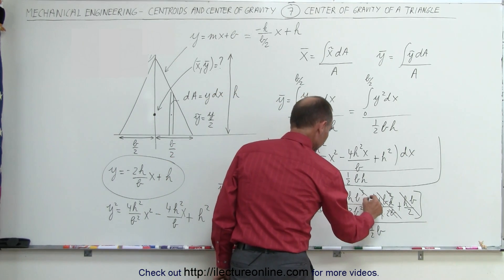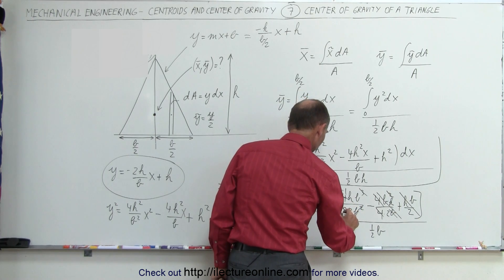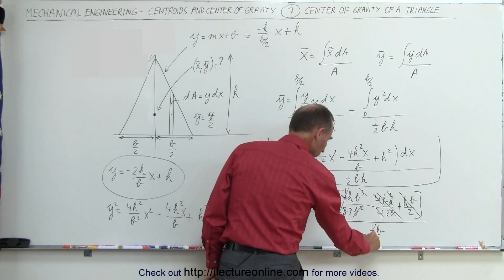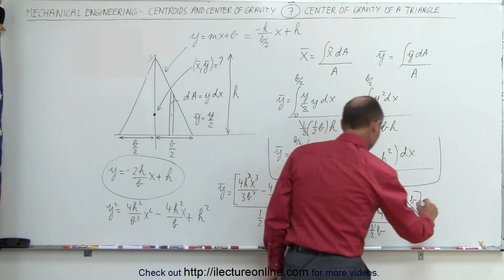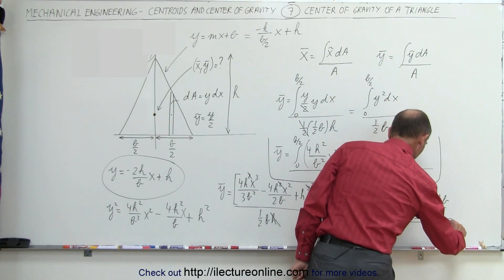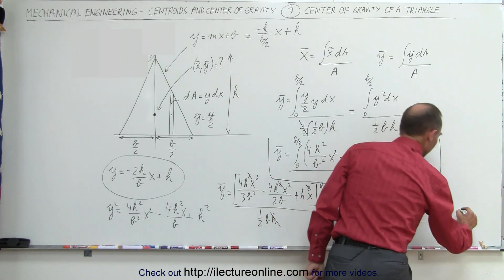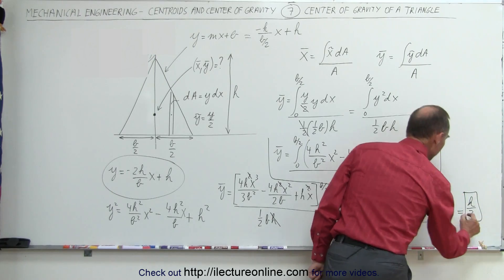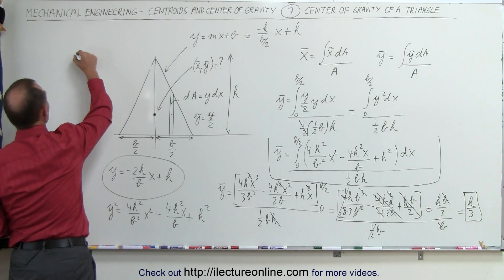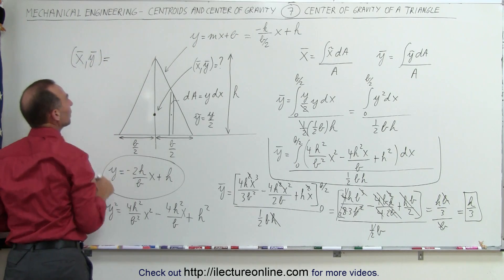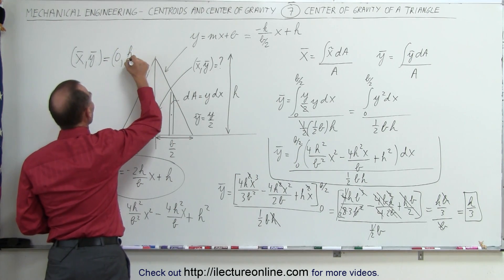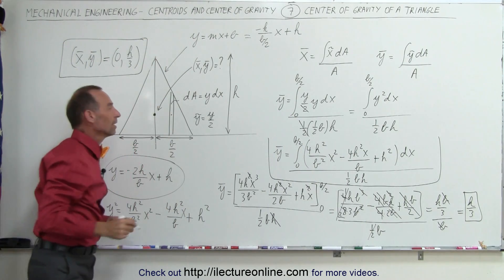We have b³ and b² remaining in the first term. The 4 and 8 reduce to 1 and 2, giving a factor of one-half. The one-half in the numerator cancels with the one-half denominator from the area. The remaining b in the numerator cancels with the b in the denominator, and we finally get h divided by 3. So the y-coordinate of the center of gravity of the triangle is h/3. The center of gravity coordinates are x = 0 and y = h/3.